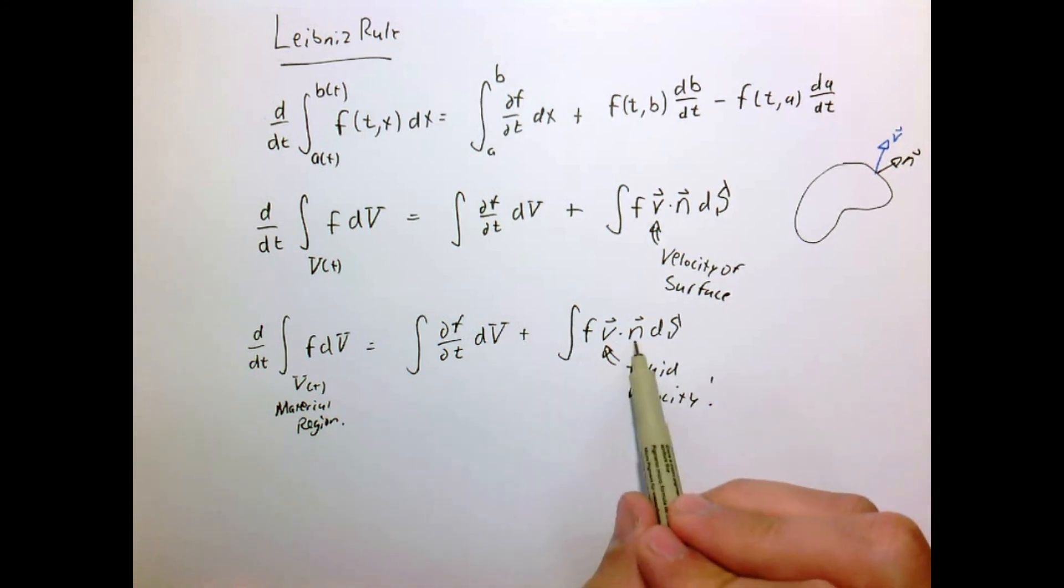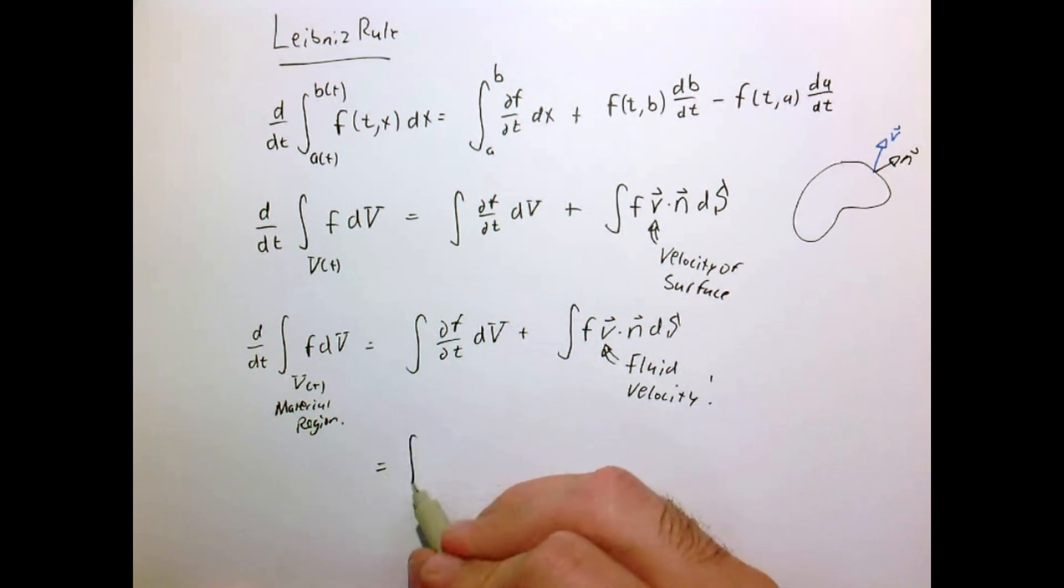So once we have this we can convert this surface integral to a volume integral using the divergence theorem. And then we can group everything together and get a nice simple result.